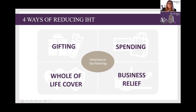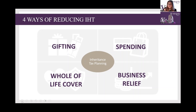The next option is gifting. When we talk about gifting, there are two different ways: directly or indirectly. Directly is where you physically give an individual money — to a child or a grandchild — and that's called a potentially exempt transfer. Or you can give money to an entity or to a trust, which is called an indirect gift or a chargeable lifetime transfer. With both of those, you can give money away, which will reduce your estate for inheritance tax planning, meaning there's less of the estate to pay inheritance tax on.